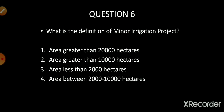Question number six: what is the definition of a minor irrigation project by area? Options are area greater than 20,000 hectares, area greater than 10,000 hectares, area less than 2,000 hectares, and area between 2,000 to 10,000 hectares. The correct answer is option number two: area greater than 10,000 hectares.